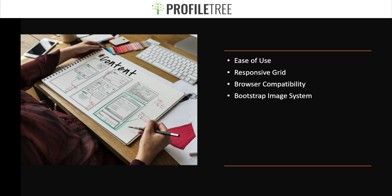Bootstrap also has an image system, which handles image display and responsiveness with predefined HTML and CSS rules. By adding the `.img-responsive` class, it will automatically resize all your images based on the user's screen — whether that's a phone, tablet, or desktop. This benefits website performance and user experience. Reducing image sizes plays a big part in optimization — you don't want too much storage usage, as that slows down load times and can deter visitors.